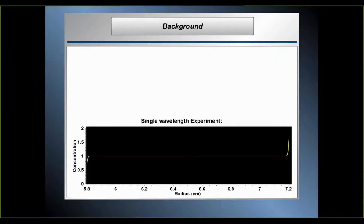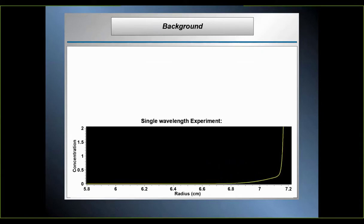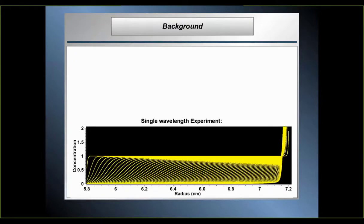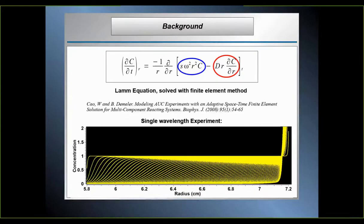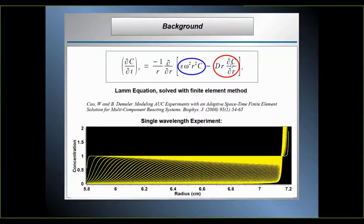To measure the concentration gradient, you shine light of a selected wavelength through the sample and watch the absorbance recorded below — how much light actually passes through. The absorbance is proportional to the concentration at every point in the cell. You make multiple recordings over time and get a full sedimentation velocity experiment with many scans, each scan being a recording at a different time point. You accelerate the rotor, the boundary starts moving and piles up at the bottom, creating a very steep concentration gradient that causes diffusion back into the cell against the sedimentation force.